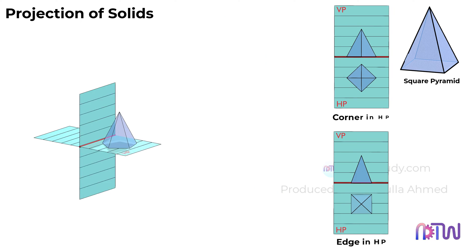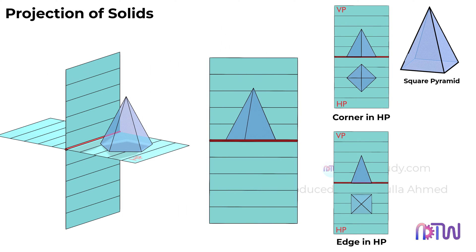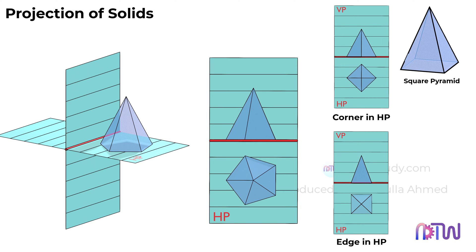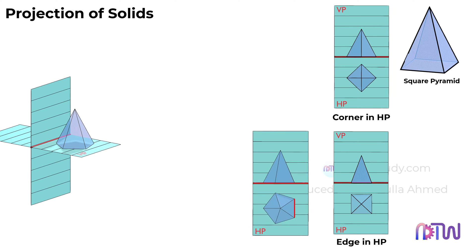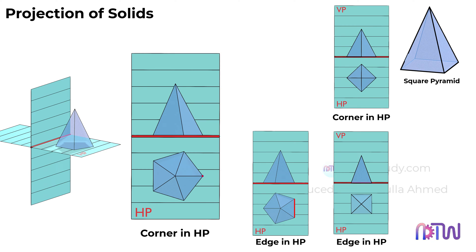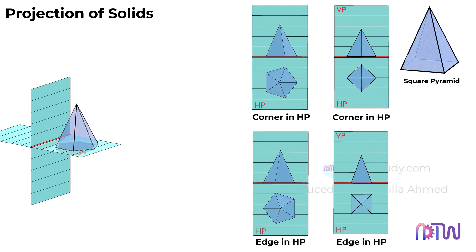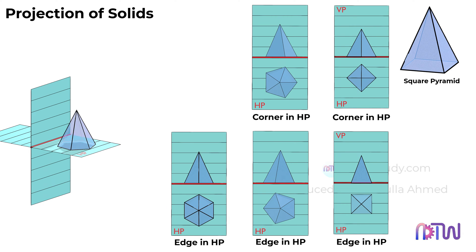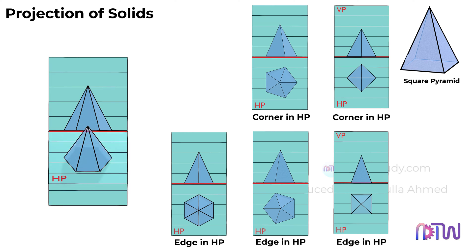Similarly, for the pentagonal pyramid, the top view will look like this when an edge of the base is resting on HP, and the top view will look like this if the corner is resting on HP. For the hexagonal pyramid, when the edge of the base is in HP, the top view will be like this, and when the corner rests on HP, the top view will look like this.